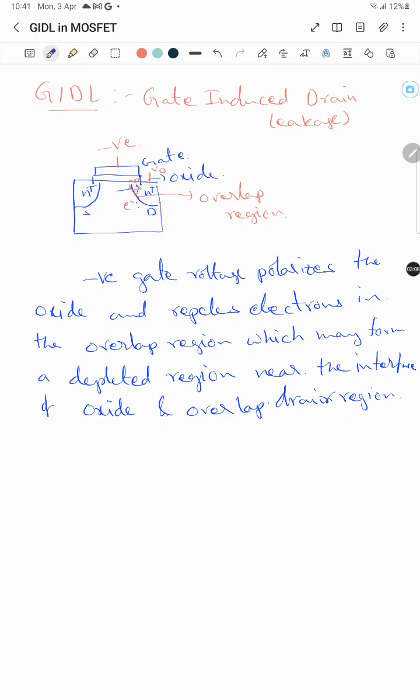If you cut a line here and draw an energy band diagram, it will be like this: negative towards oxide and positive towards the interface. You will have the electric layer like this, and at the interface you will have a positive charge.